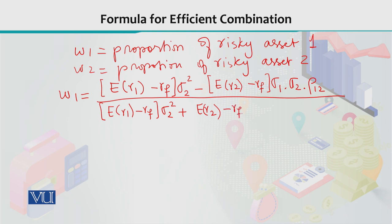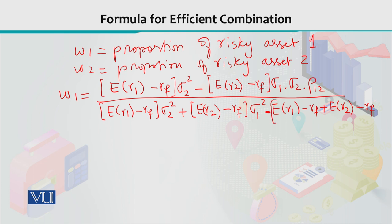This numerator is divided by the denominator, which includes: expected return of risky asset one minus risk-free return, plus expected return of risky asset two minus risk-free return — each multiplied by the respective variances — minus the cross terms multiplied by the correlation coefficient rho(1,2) and the standard deviations of risky asset one and risky asset two. The result gives you the value of W1, the proportion of total investment that goes to risky asset one.